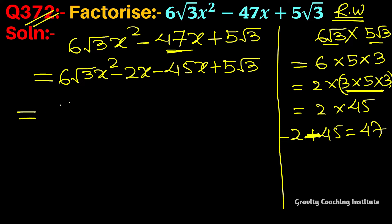Now 2x is common, so 2x is common with 3√3x - 1, and for the last two terms, minus is common.